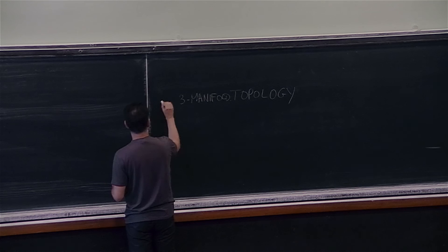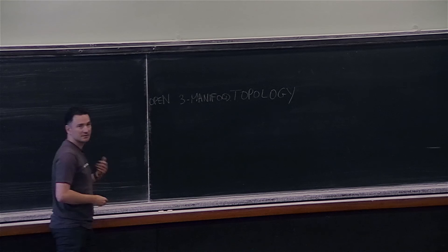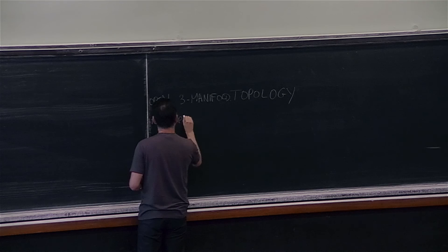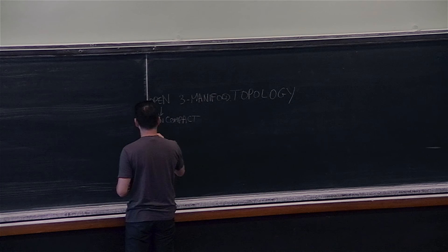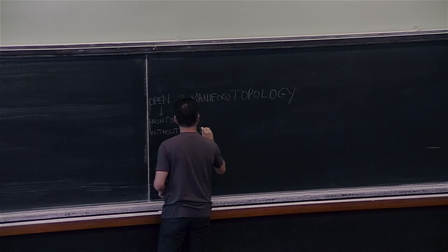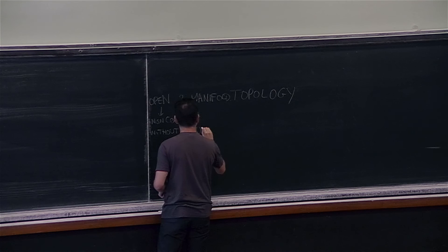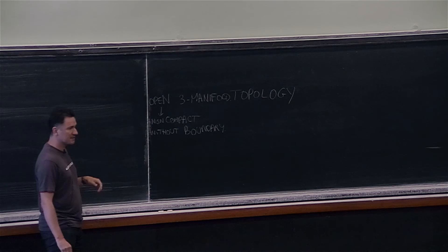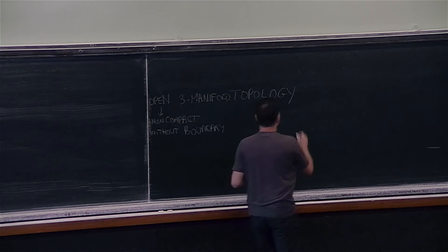This is a standard subject. One subject which is slightly less well-known, although there is an extensive literature on it, is open three-manifold topology. That is, you look at three-manifolds which are non-compact. In this context, 'open' really means non-compact and without boundary. I will also tell you about compact three-manifolds, because it's important to first learn about compact three-manifolds, then try to understand what happens when the manifolds are not compact.